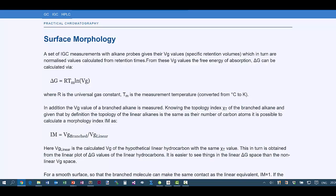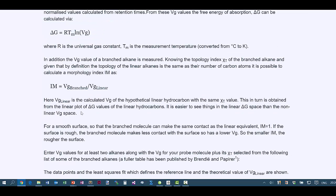We can do something more exciting if we do the same experiments but add one other type of probe. We know that delta G is RT log N Vg, and we can calculate a morphology index IM, which is the Vg measured from a branched alkane compared to the Vg of that same alkane if it were linear.